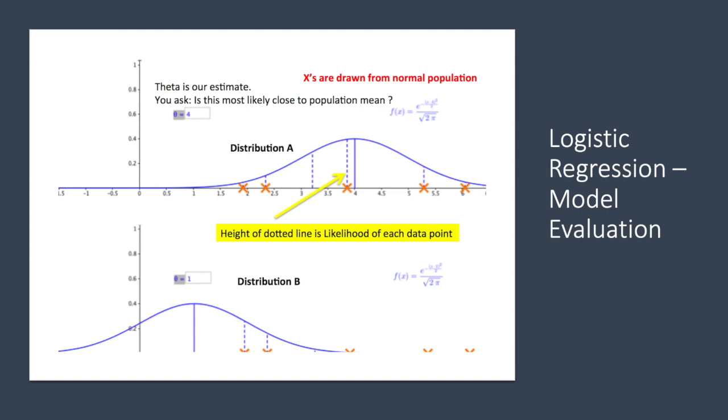If you remember in linear regression, we minimize the empirical risk by using the loss function. We use the average squared error loss, also known as mean squared error or MSE, as we already discussed.